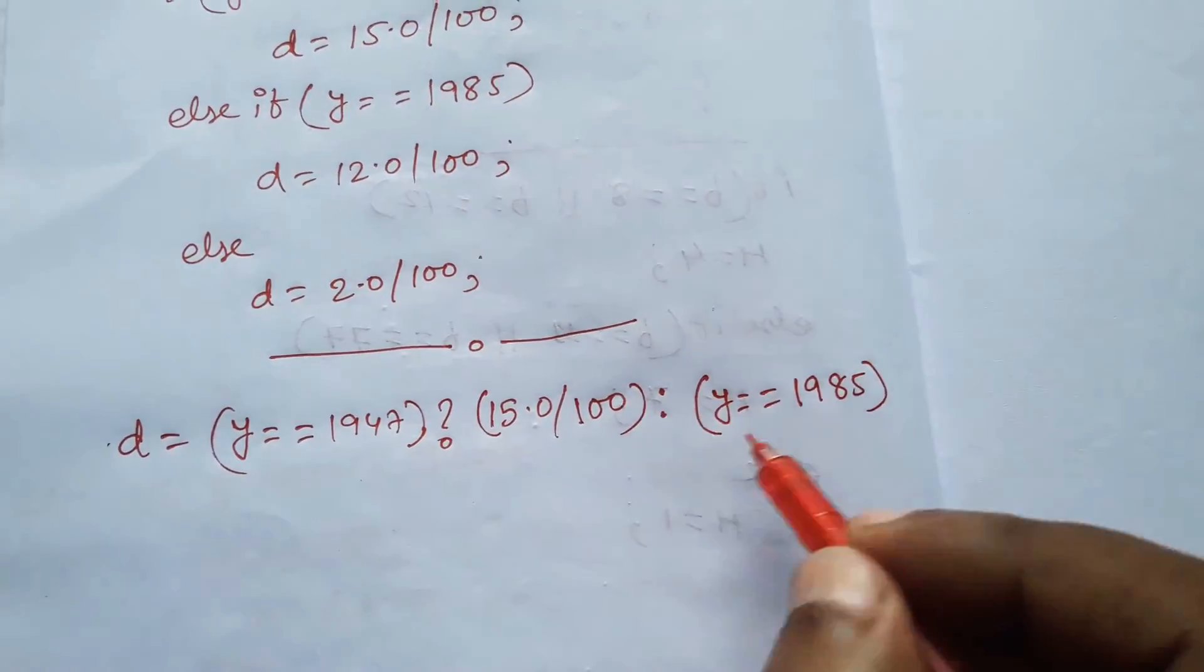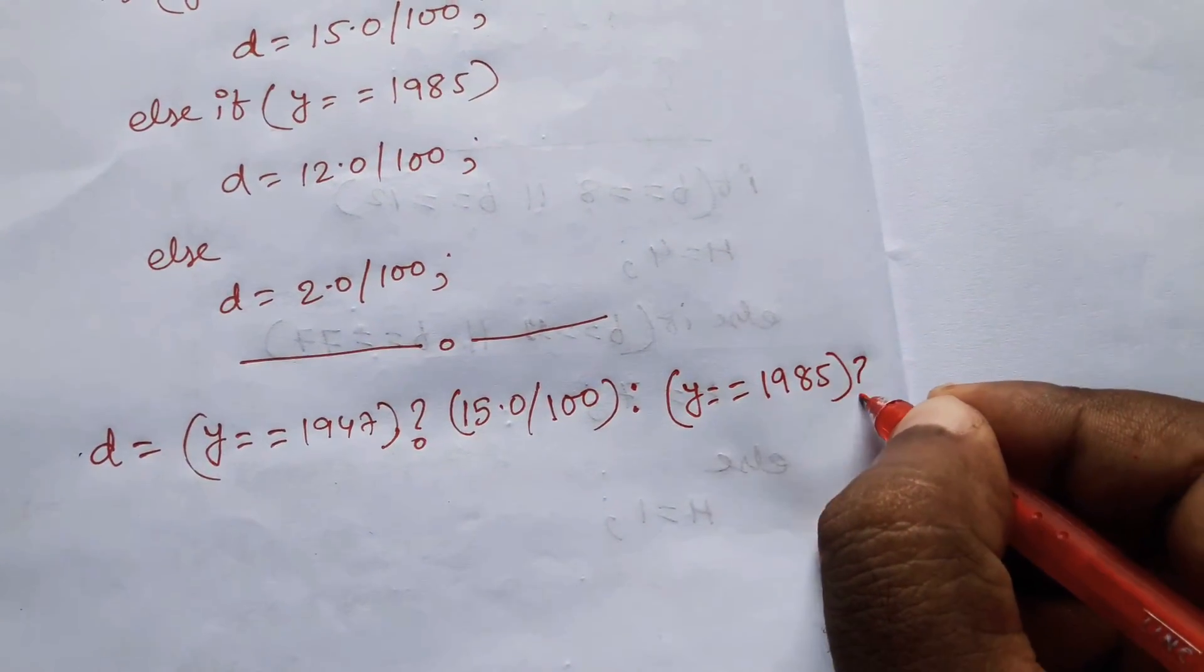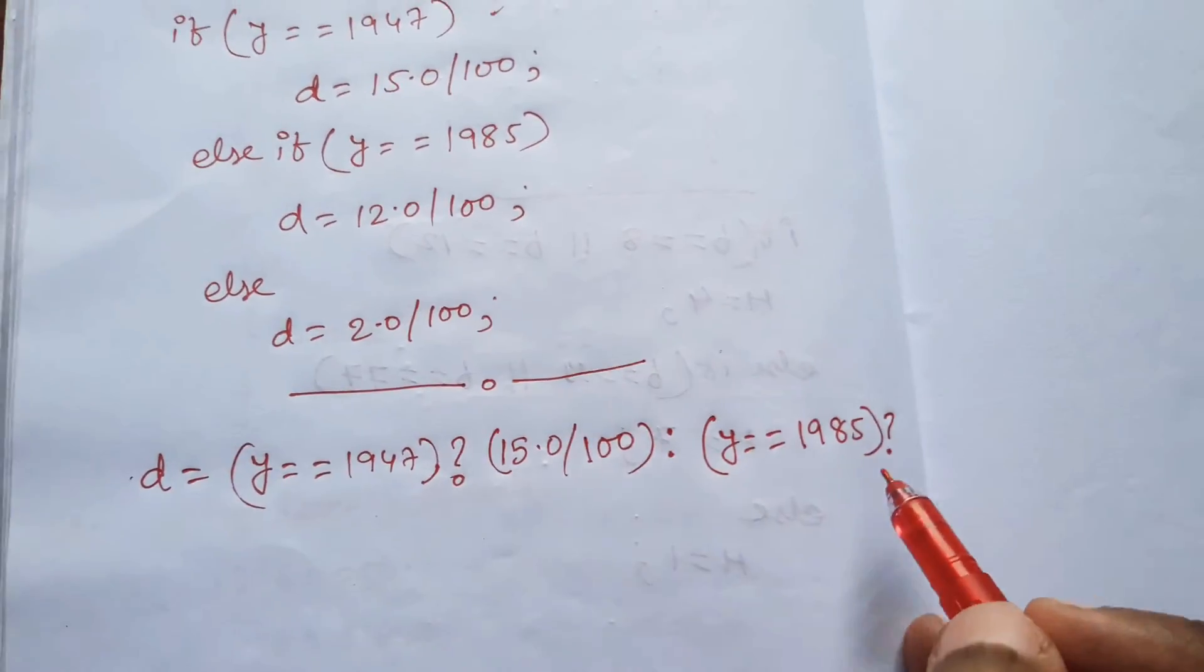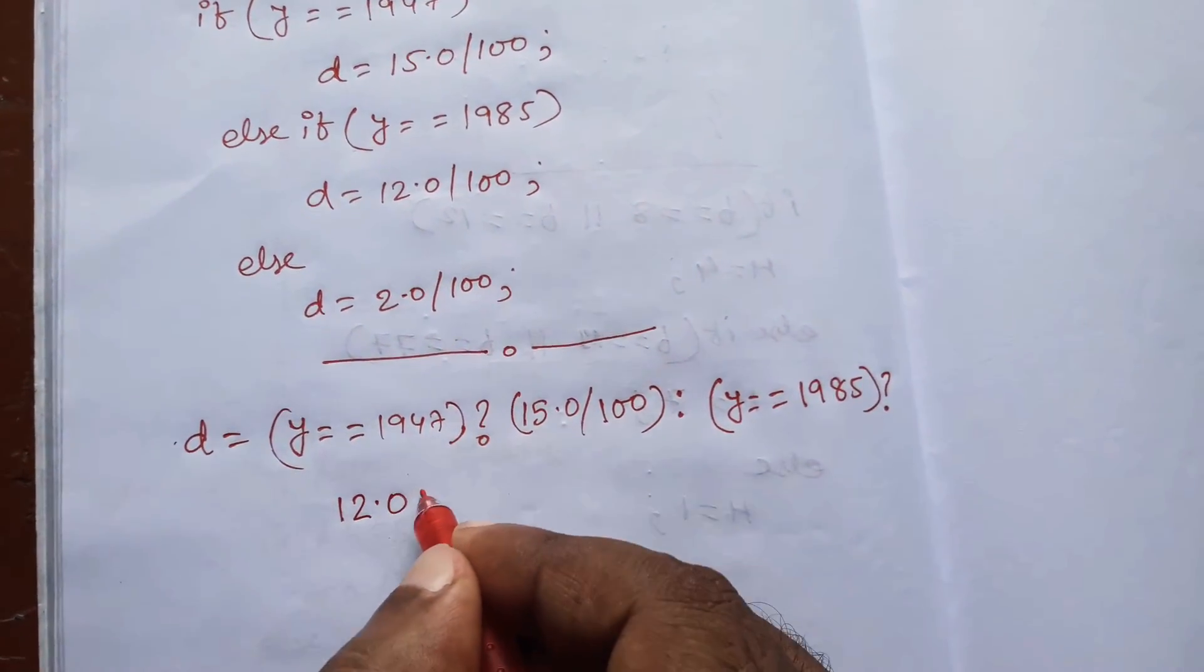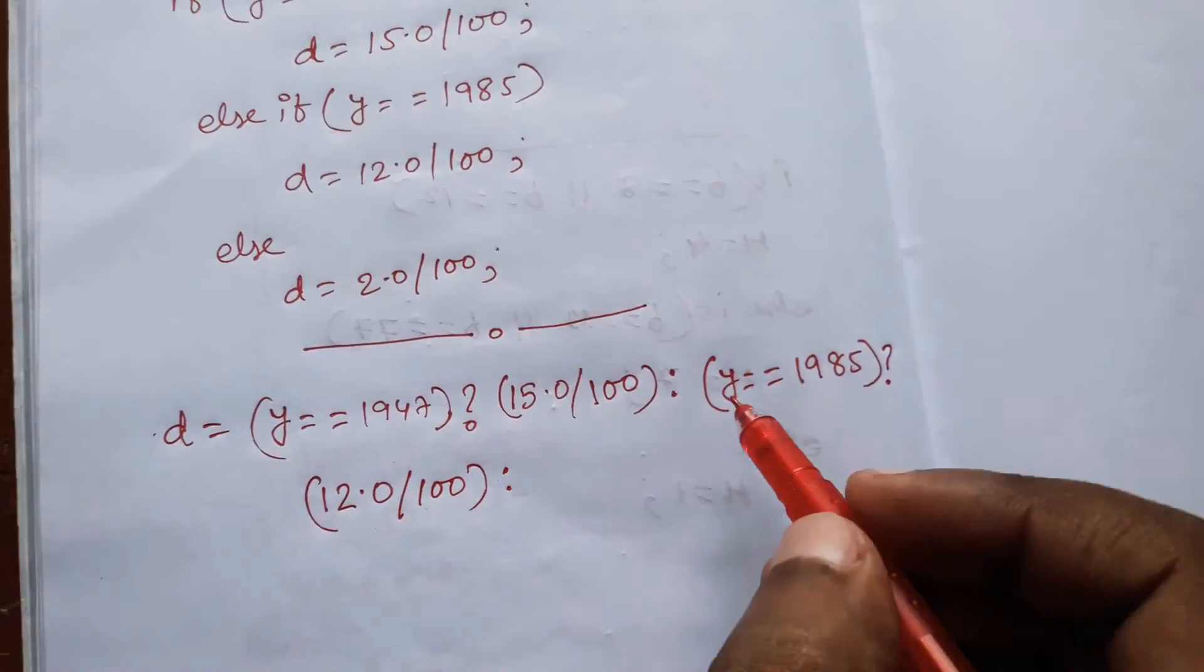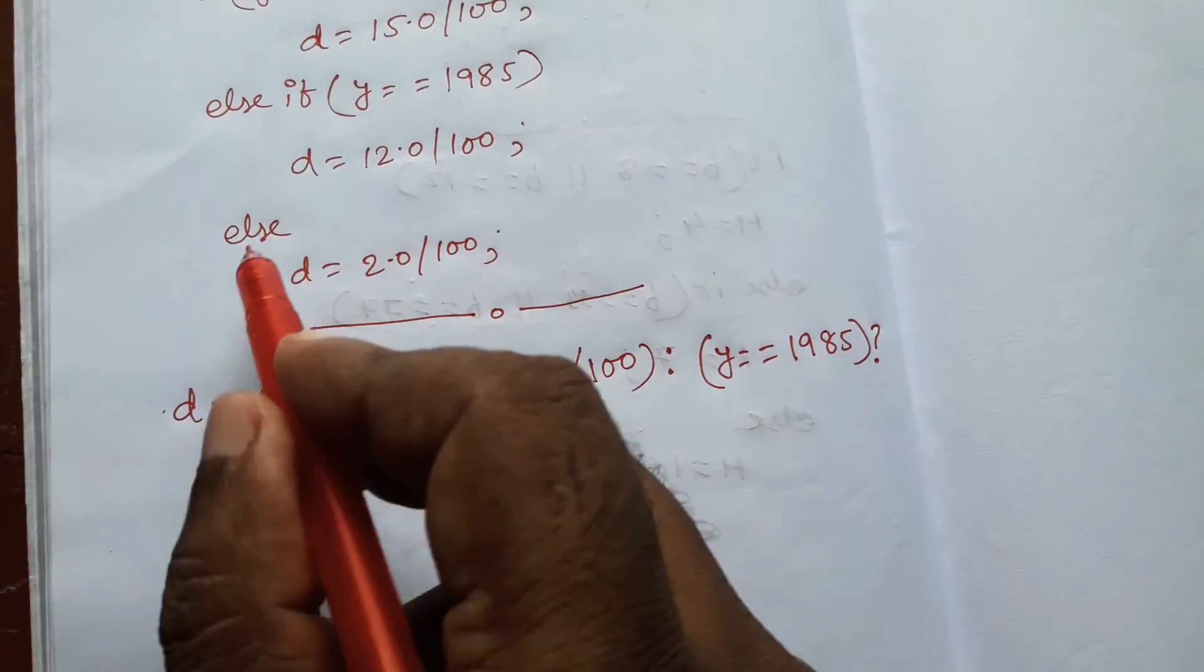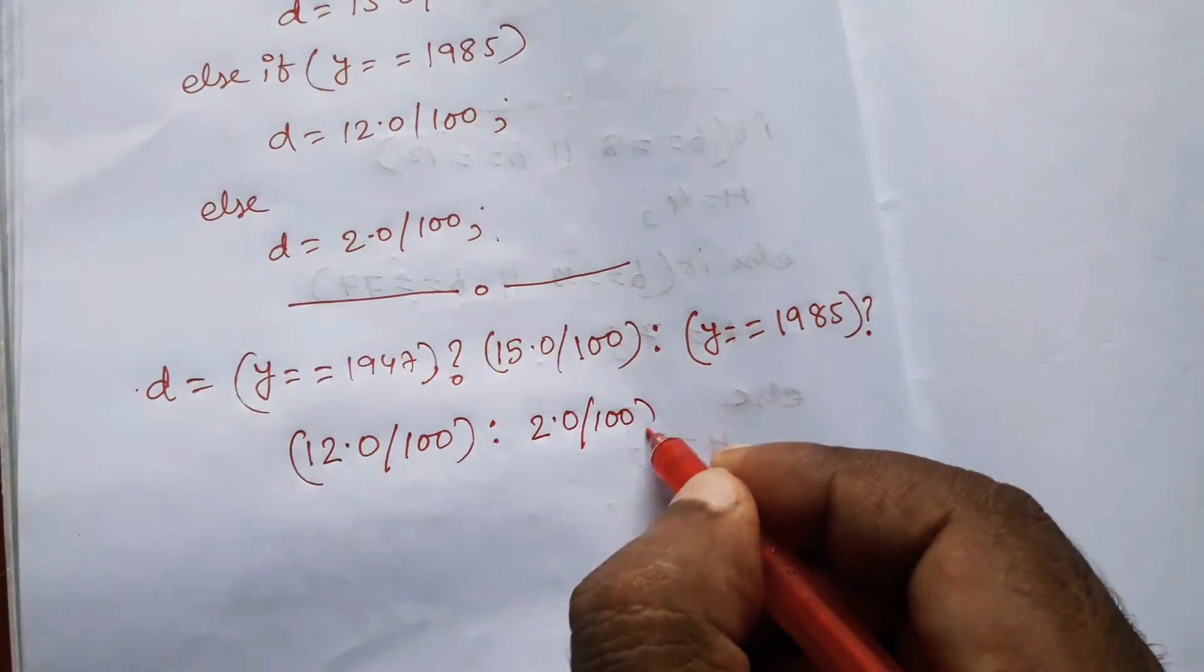This is our first part. For this we write question mark. For this we have another option: d equals 12.0 by 100, so we write 12.0 by 100 within bracket. Then we give colon because if it is true it executes this, but if false it executes this part. Here we write 2.0 by 100.